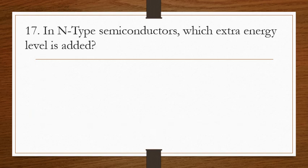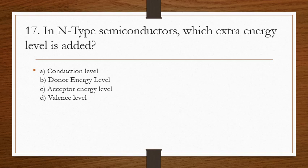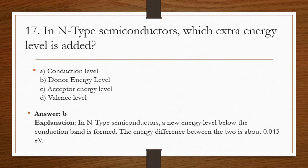Question 17: in N-type semiconductors, which extra energy level is added? The answer is B. In N-type semiconductors, a new energy level called the donor energy level is added just below the conduction band. The energy difference between these two energy levels is 0.05 eV.